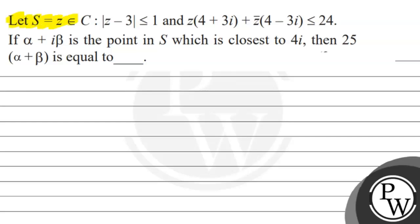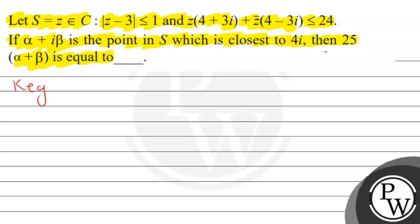The question states that S is equal to z belonging to ℂ such that modulus of z minus 3 is less than or equal to 1, and z times (4 plus 3i) plus z̄ times (4 minus 3i) is less than or equal to 24. If alpha plus i·beta is the point in S which is closest to 4i, then we need to find 25 times (alpha plus beta).